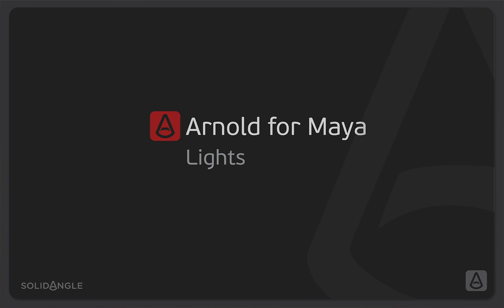Hi, I'm Ben Greasley and in this video we're going to be looking at how Arnold works with lights. We're going to be looking at the default Maya lights that Arnold is able to render and the specific Arnold lights that we have built in. We're going to be mainly looking at the Arnold menu and how we can work with decay rates, exposures, and samples to get the best looking lights in our render, starting with a simple point light.